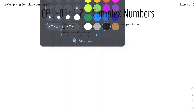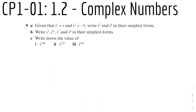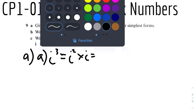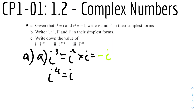Question 9: given i¹ = i and i² = −1, write i³ and i⁴ in simplest form. For i³: i³ = i² × i = −1 × i = −i. For i⁴: i⁴ = i² × i² = (−1)(−1) = 1.